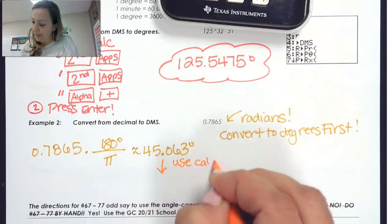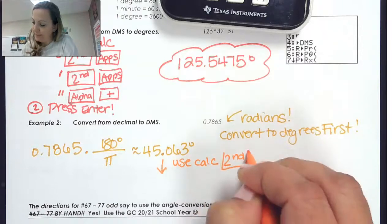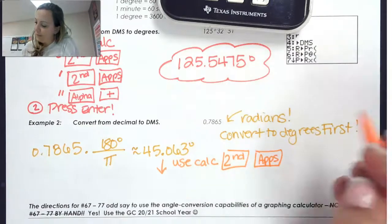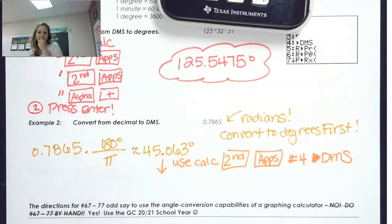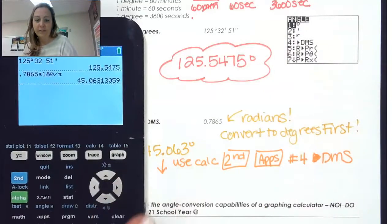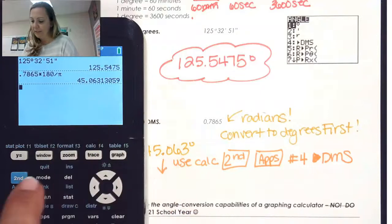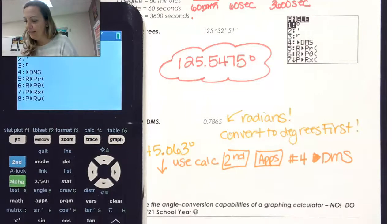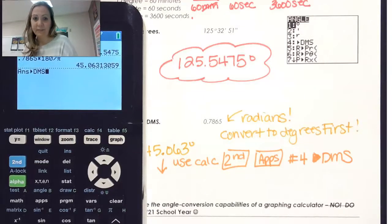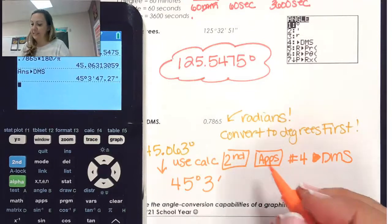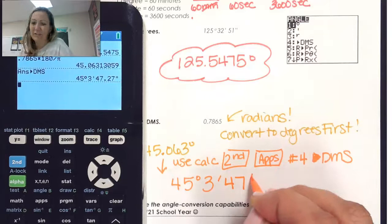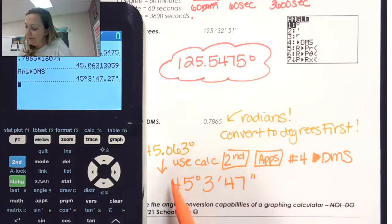We'll go to Second-Apps again to get to the angle menu, and find number 4. Number 4 has a little arrow to convert to DMS — degrees, minutes, seconds. So with this value in the calculator, do Second-Apps, angle menu, number 4, and press Enter. We can see that this is 45 degrees, 3 minutes, and 47.27 seconds. Usually you'd round to the nearest second, but that would be our conversion.